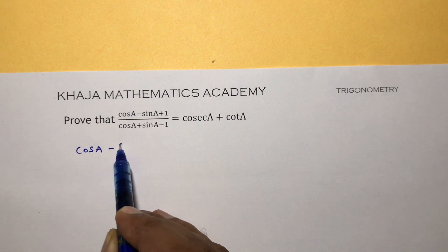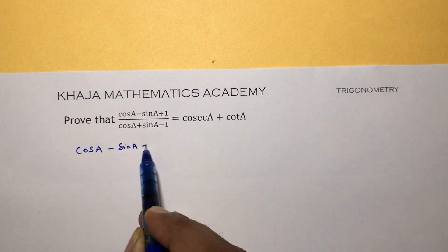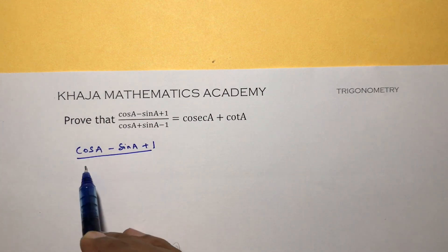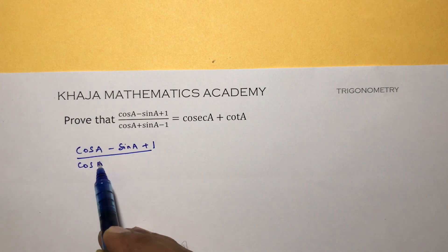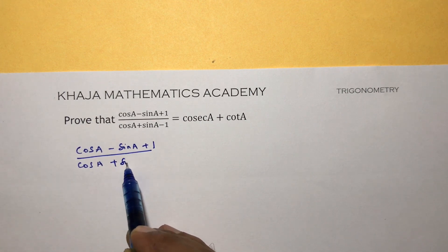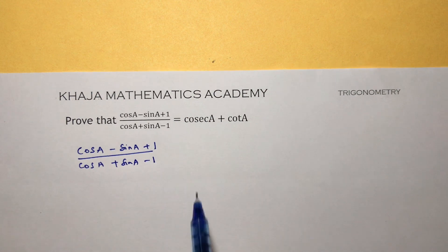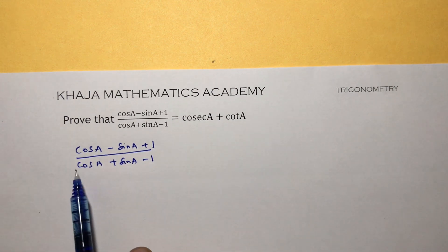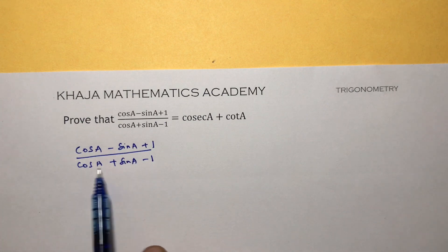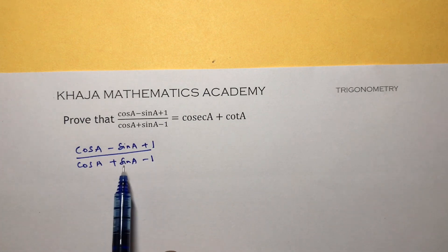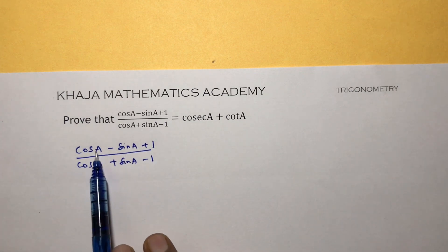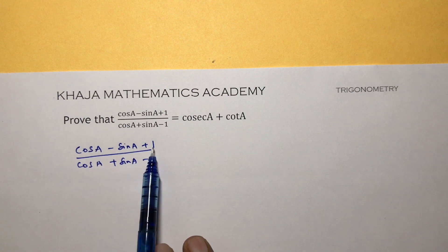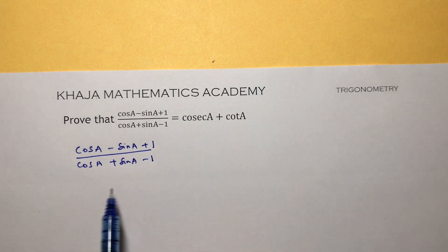cos A - sin A + 1 by cos A + sin A - 1. Here you have cosec and cot, so try to change this in terms of cosec and cot. Divide everything by sin. If you divide everything by sin, cos by sin becomes cot, sin by sin gets cancelled, 1 by sin is cosec, so the total question you will get in terms of cosec and cot.